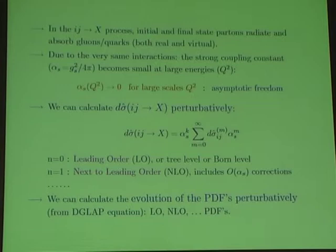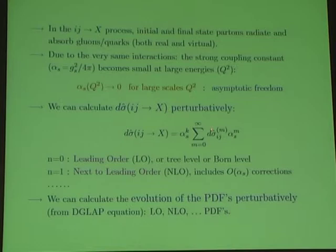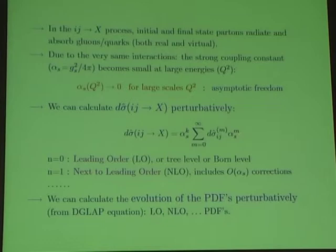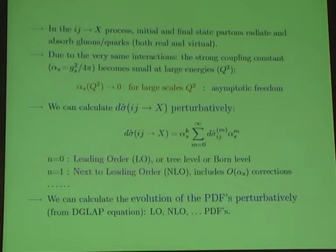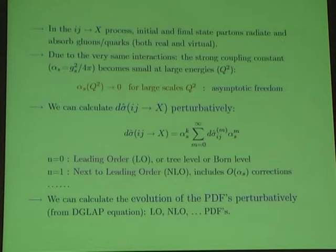The perturbative approach means that the differential parton-level cross-section d-sigma-hat can be expressed as a perturbative series in the strong coupling alpha_s, given by the ratio g_s squared over pi. At each order we have a d-sigma-hat_n, the coefficient of the corresponding power of alpha_s. Factoring out alpha_s^k — the power of the leading-order process — for n=0 we have the leading-order or born-level, and for n=1 we have the next-to-leading order, which includes the first order alpha_s corrections. This is what we will focus on.